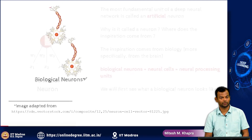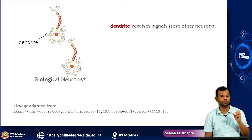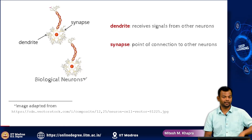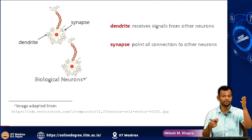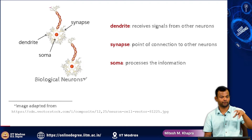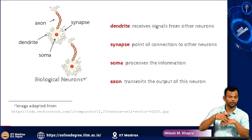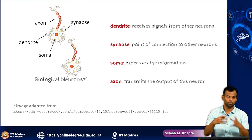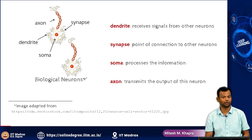Let us look at what a biological neuron looks like. Here is a picture showing two neurons. You have a dendrite which receives signals from other neurons. These neurons are connected, and there is the synapse which is the point of connection between the two neurons. Then there is the soma, which you could think of as the central processing unit where all the information gets processed. And then you have the axon — once the information has been processed, the axon is responsible for carrying it out to the other neurons. So: dendrite to receive signals, synapse is the point of connection, soma is where processing happens, and axon is where you transmit the output to other neurons.